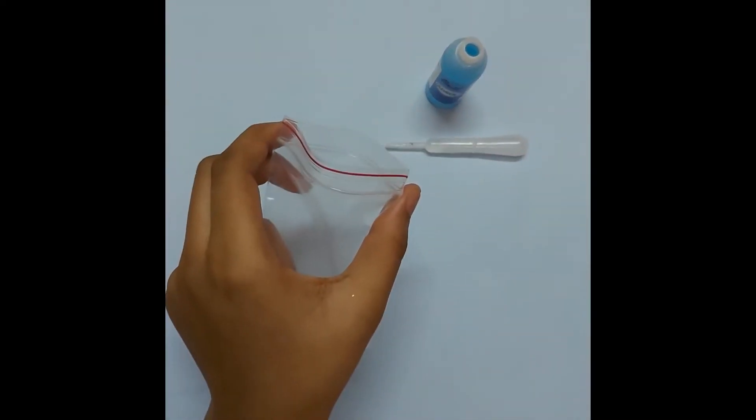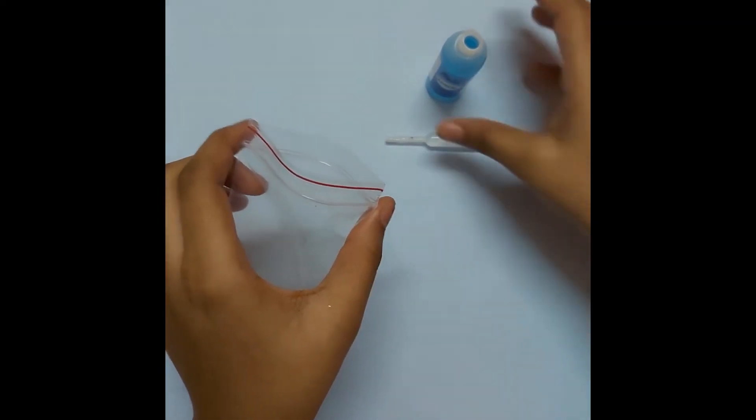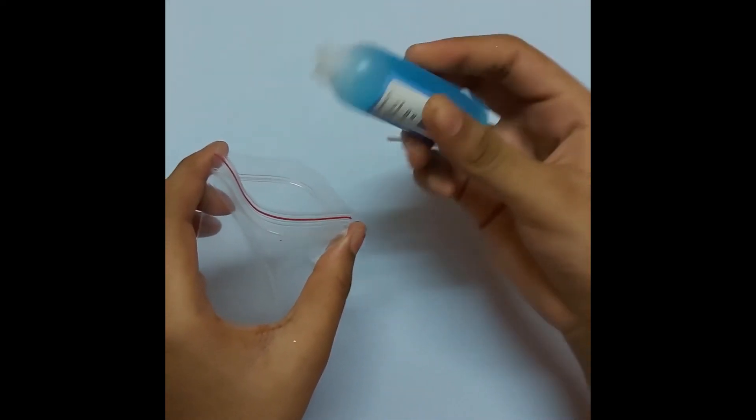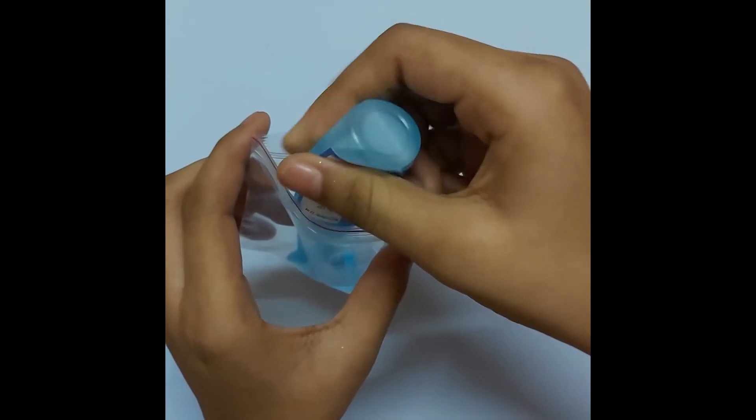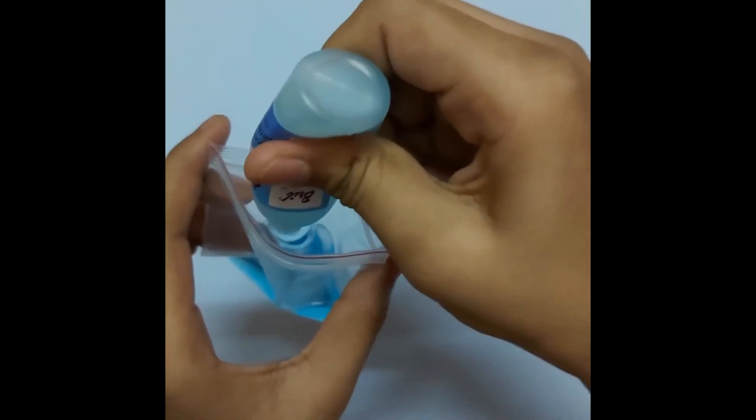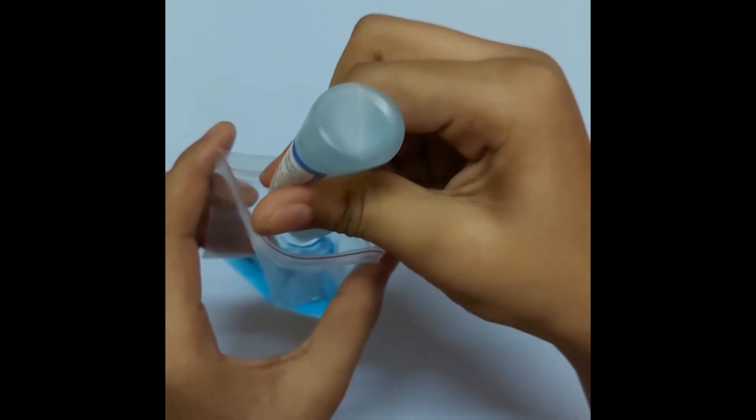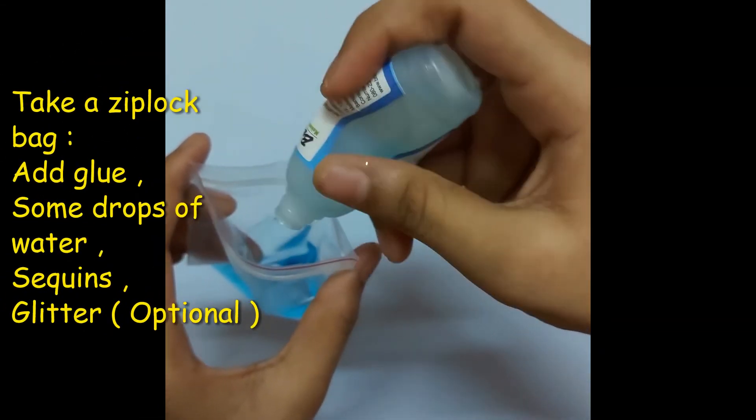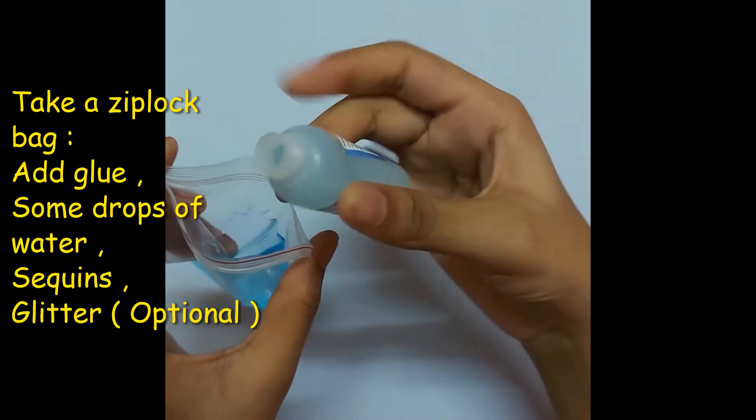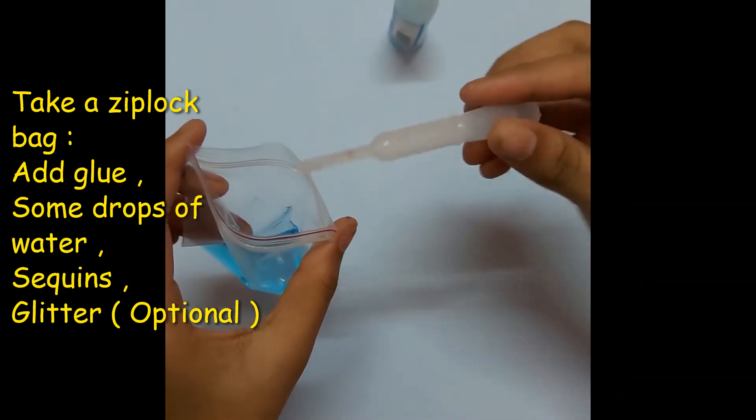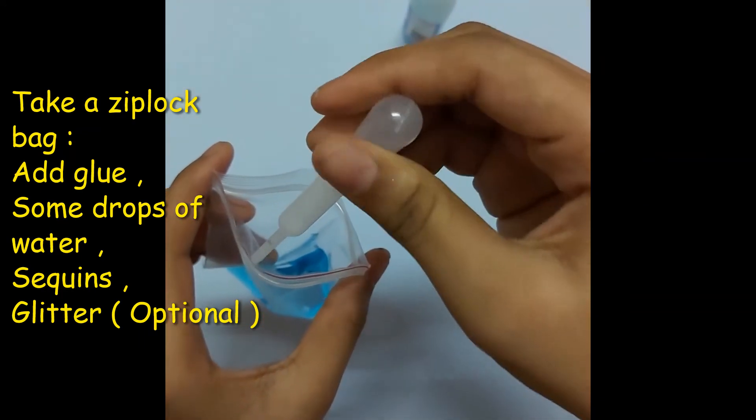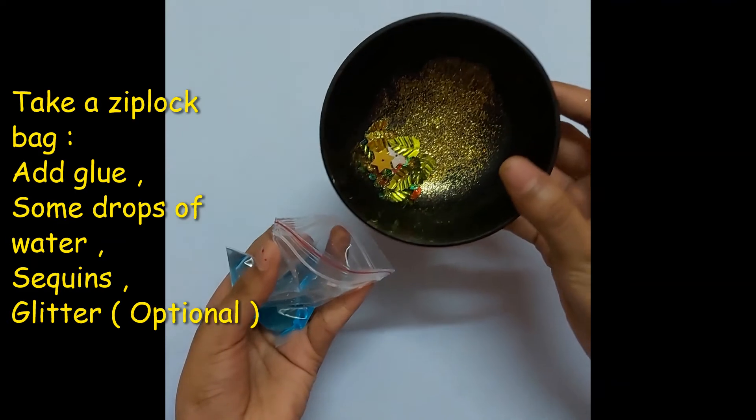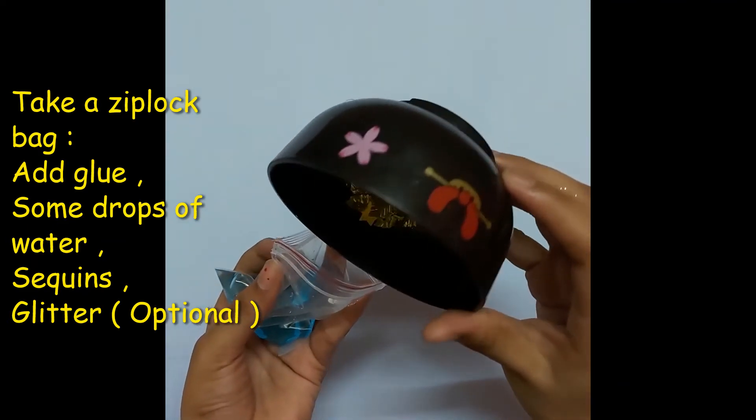Next everyone take a small ziplock bag and open it. Take glue and then pour the glue inside the ziplock bag. After pouring in the glue, pour some water. Next everyone take some sequins and then paste it inside the ziplock bag.